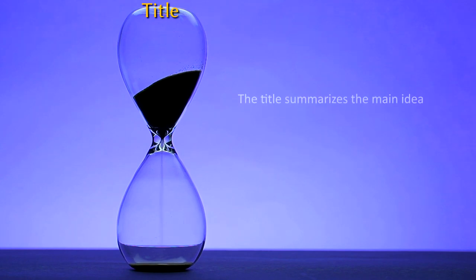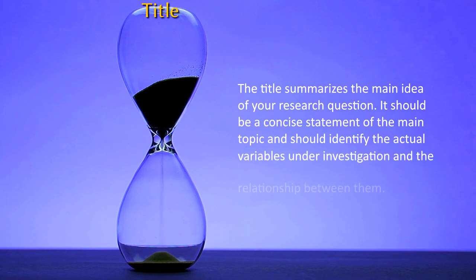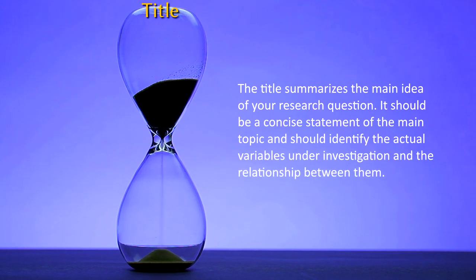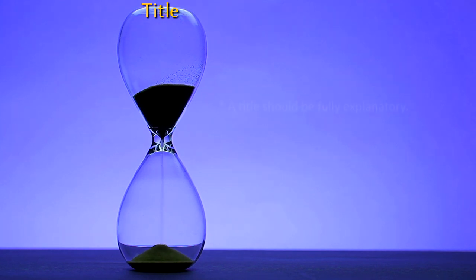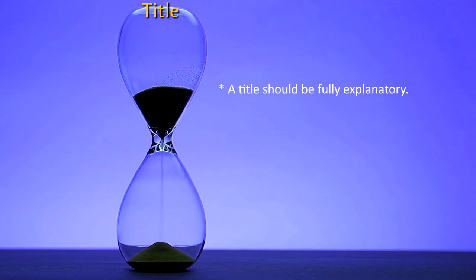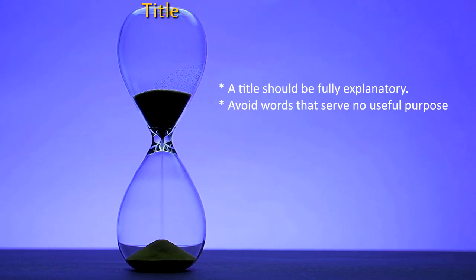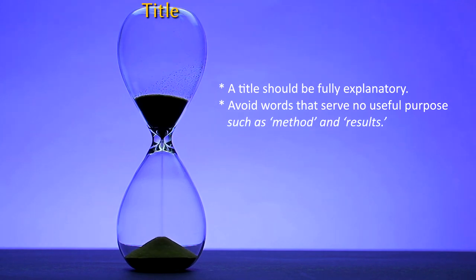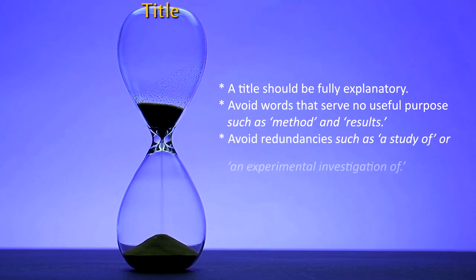The title summarizes the main idea of your research question. It should be a concise statement of the main topic and should identify the actual variables under investigation and the relationship between them. A title should be fully explanatory when standing alone. You should avoid words that serve no useful purpose — for example, the words 'method' and 'results' do not normally appear in a title, nor should such redundancies as 'a study of' or 'an experimental investigation of' begin a title.